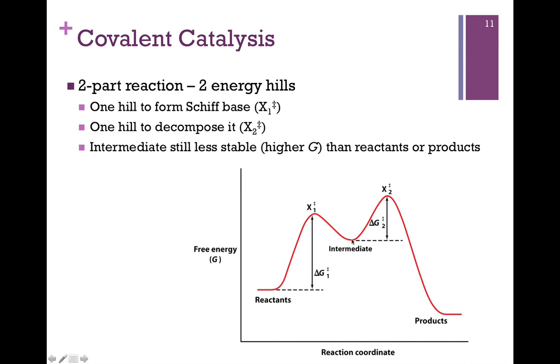Now you'll notice the intermediate here, that is the valley between the two hills, represents the point at which we formed that covalent bond with the substrate or product before its release. You'll notice that it is at a lower energy level than either of our two intermediates, and yet it is a higher energy level than either the reactants or products.